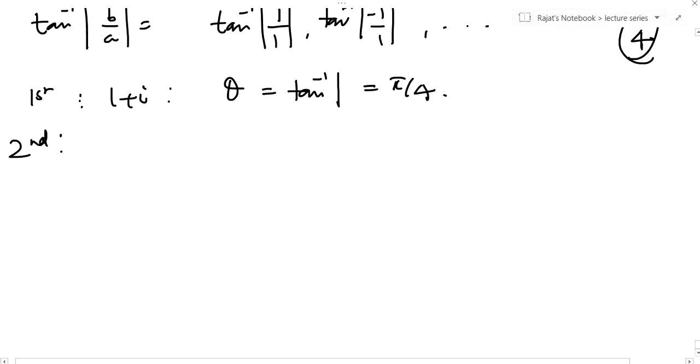If it is the second quadrant, then the point will be minus 1 plus i. Theta will be π minus tan inverse 1, so it is 3π by 4. Just compare the answer that we got.